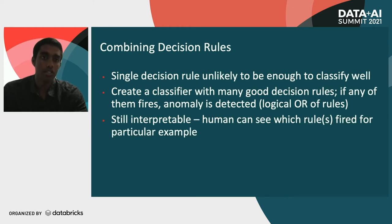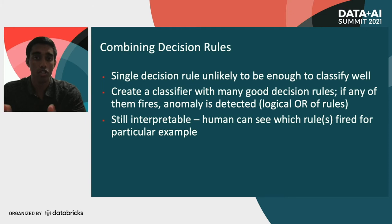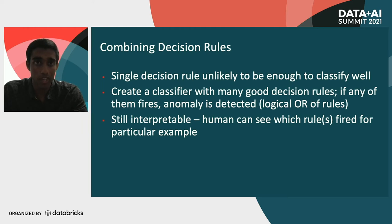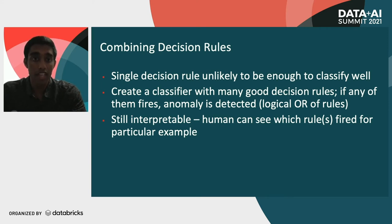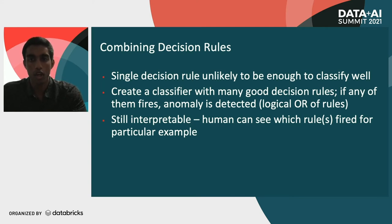To get good performance, we need to combine decision rules because a single decision rule is unlikely to classify your whole range of examples. A rule like 'manufacturer equals Samsung' has high precision but doesn't cover your whole range of anomalies. So we create a classifier with many good decision rules that cover the entire space of anomalies, and if any rule fires on an example, we say that anomaly is detected — formally, we take the logical OR of all the rules in our classifier.